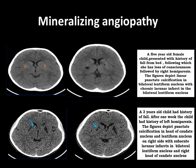Another case of a three-year-old child who had a history of fall. After one week, the child had a history of left hemiparesis. These figures depict punctate calcification in the head of caudate nucleus and lentiform nucleus on the right side with subacute lacunar infarcts in bilateral lentiform nucleus and right head of caudate nucleus.